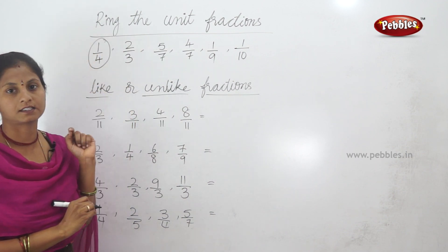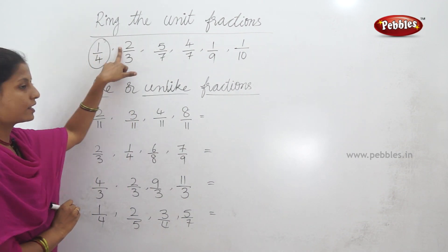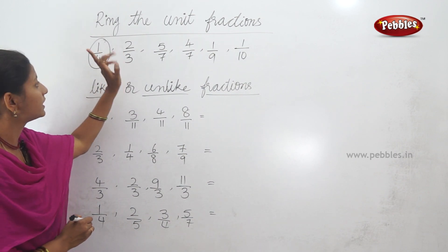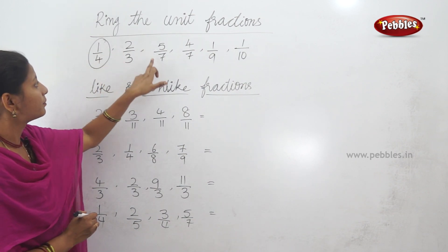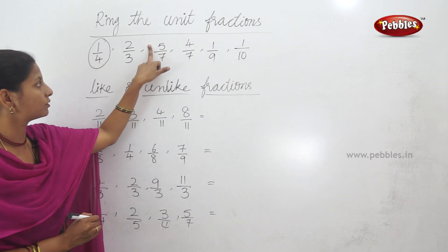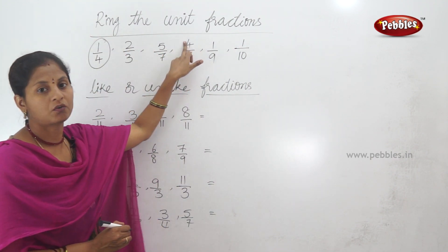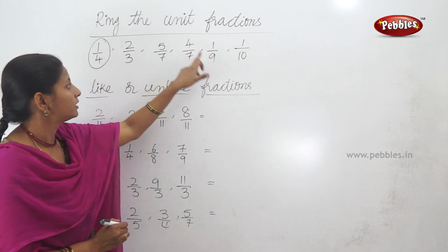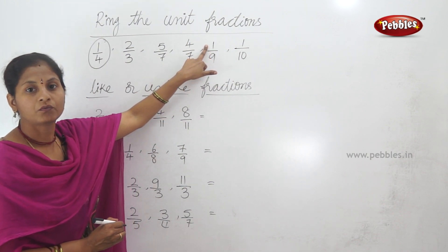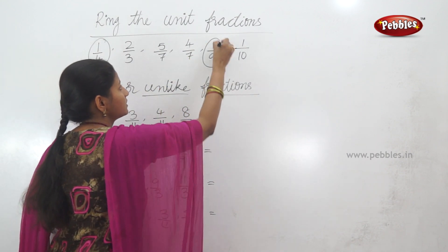First fraction: 1 by 4. What is the numerator? 1. The numerator is 1 — this is a unit fraction. Next: 2 by 3. The numerator is not 1 — this is not a unit fraction. Next: 5 by 7 — numerator is not 1, not a unit fraction. 4 by 7 — numerator is not 1. 1 by 9 — numerator is 1, this is a unit fraction.